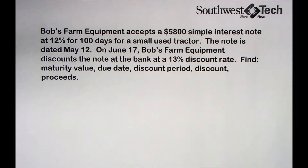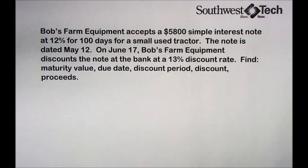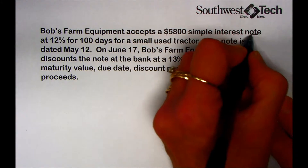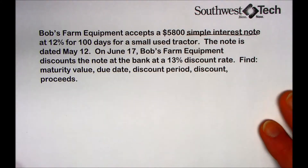In this problem, we're going to take a look at a note that starts out as a simple interest note and then, before it's matured, the holder of the note sells it at a discount. Bob's Farm Equipment accepts a $5,800 simple interest note at 12% for 100 days for a small used tractor.